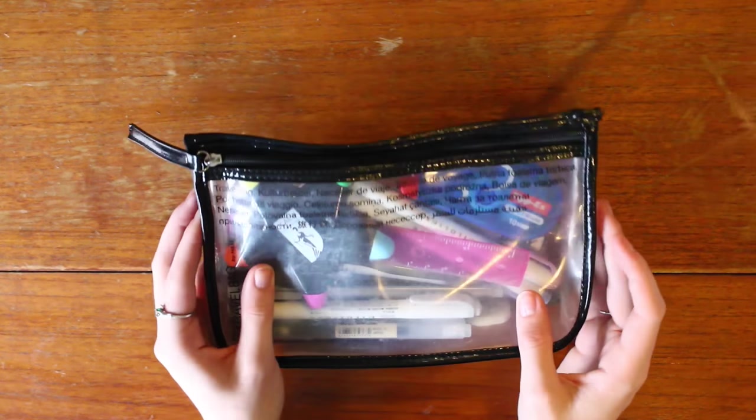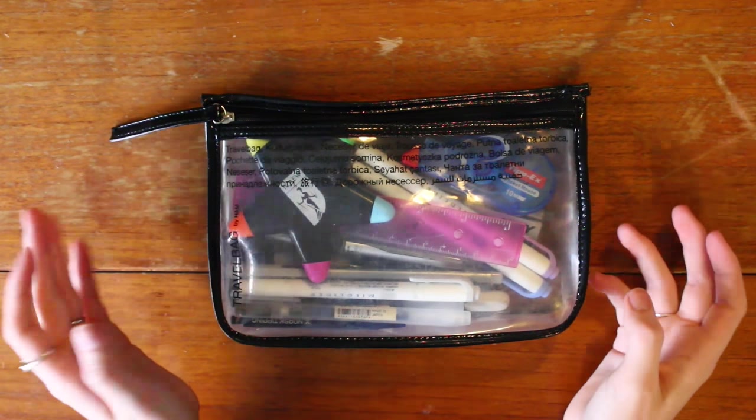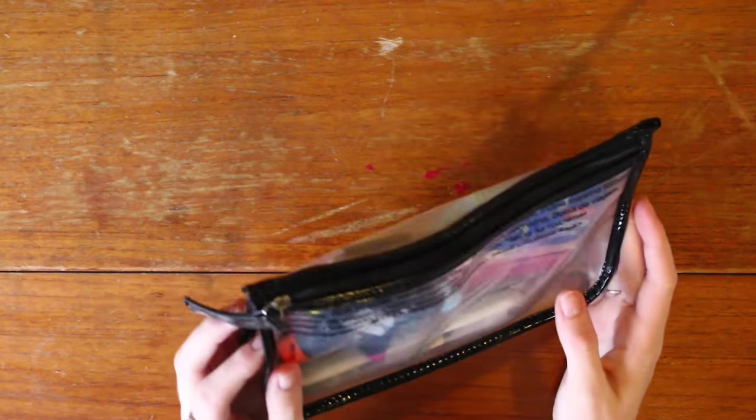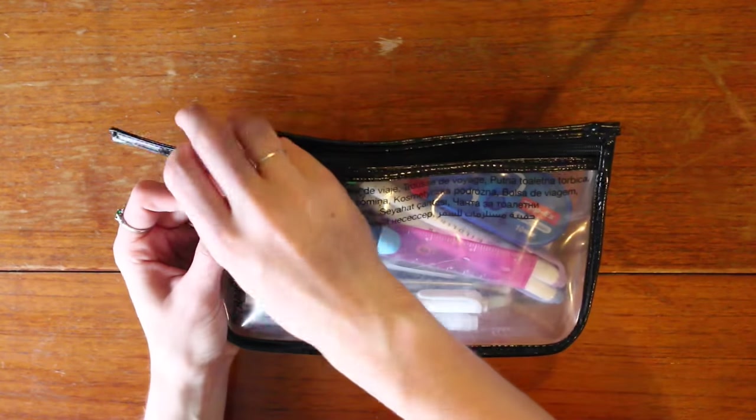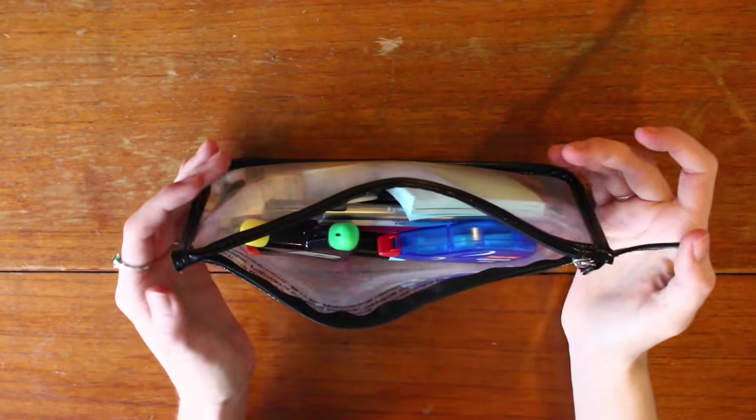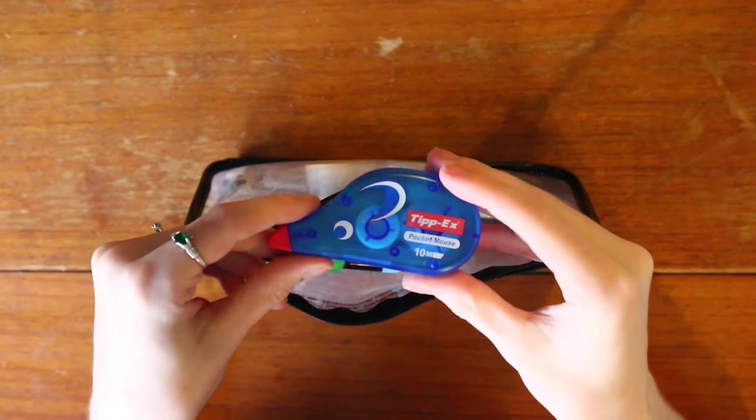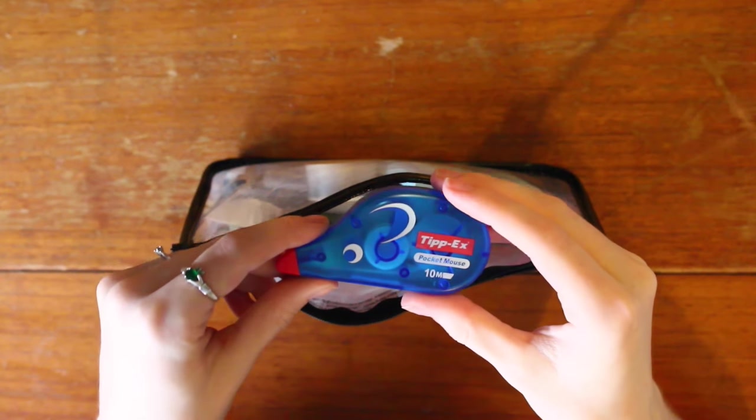So this is not really a pencil case. It's an H&M travel bag but I really like it for my pencil case because I can have a glance and see what is in it. So as I said this is the one I keep at home and first of all I have some Tippex because who doesn't need Tippex at every point in their life right?